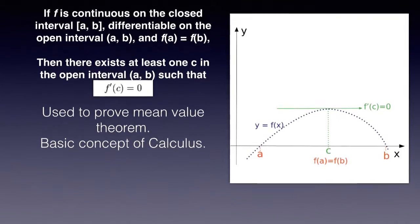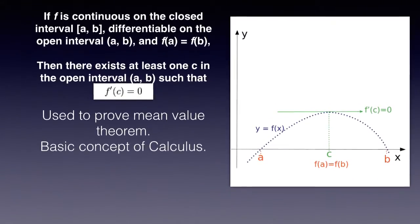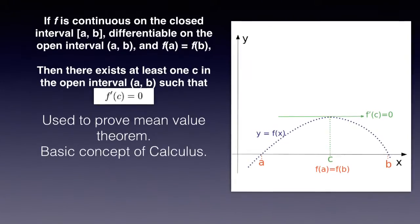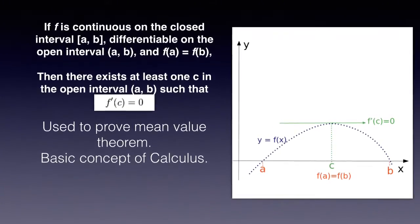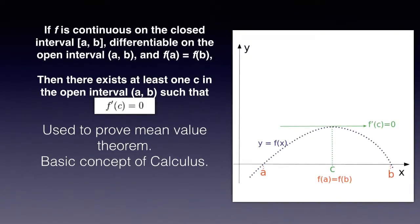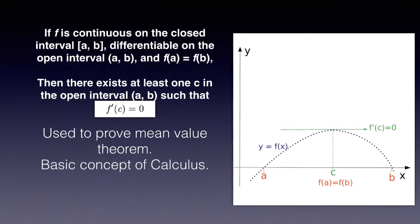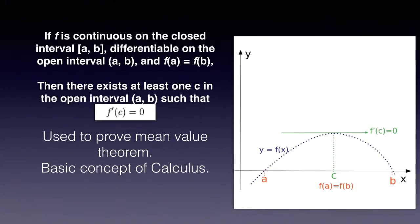If f is continuous on the closed interval a to b, differentiable on the open interval a to b, and f of a equals f of b, then there exists at least one c in the open interval a to b such that f prime of c equals zero. This is used to prove mean value theorem and is a basic concept of calculus.